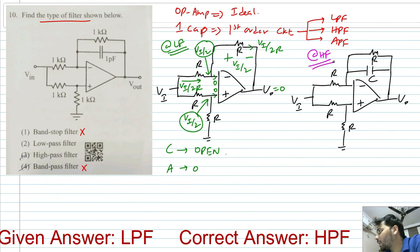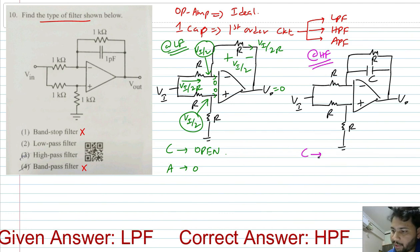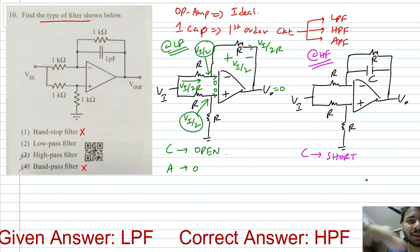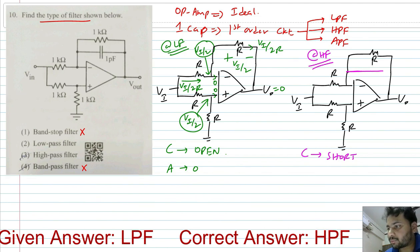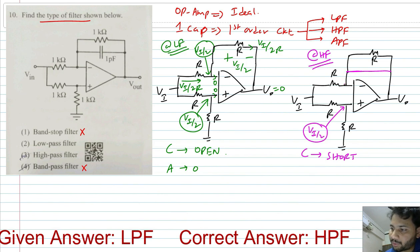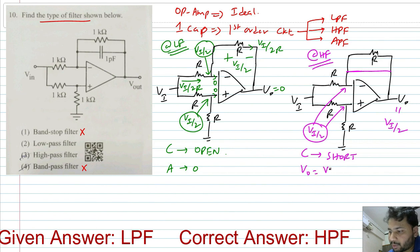Now let us analyze the circuit when the input is at high frequency. At high frequency, the capacitor behaves like a short circuit, so we replace the capacitor with a short circuit. Whatever the frequency, the voltage at the plus input terminal will be VI/2. From virtual short, V- will also be VI/2. The minus input terminal is directly shorted to the output, so V-out is also VI/2. The gain is therefore one-half.